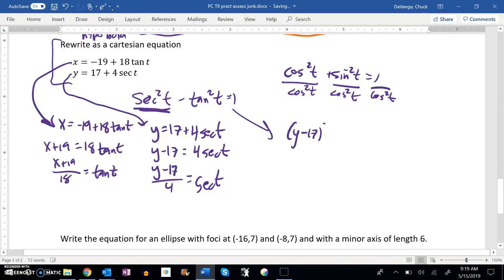So y minus 17 squared over 4 squared, which is 16, minus tangent squared, which is x plus 19 squared over 18 squared—that's 324—equals 1.